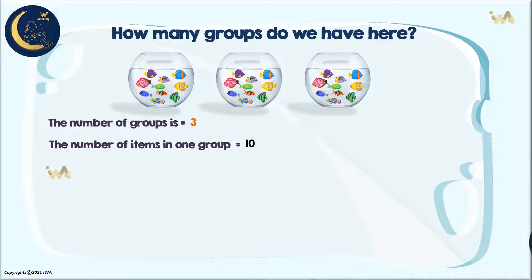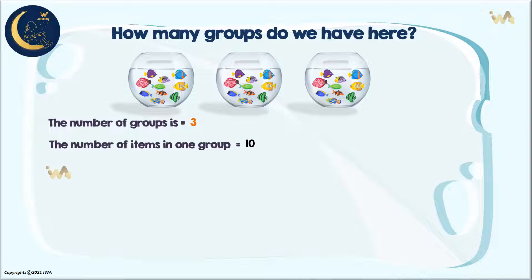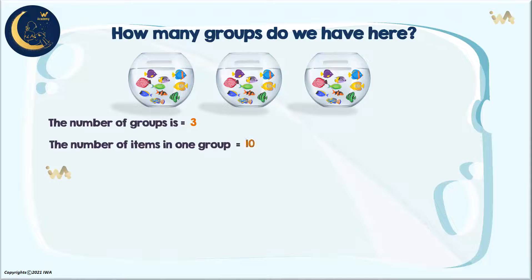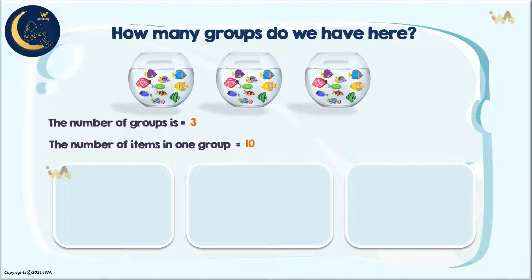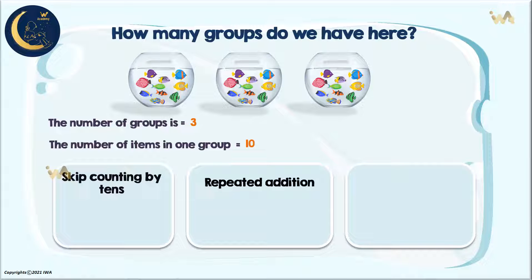Excellent! How do we know how many fish we have? Did you notice that the number of fish is equal in all groups, and that number is ten? Therefore, we can use three methods to know the number of these items. The first method is skip counting by tens. The second method is repeated addition. And the third method is multiplication.